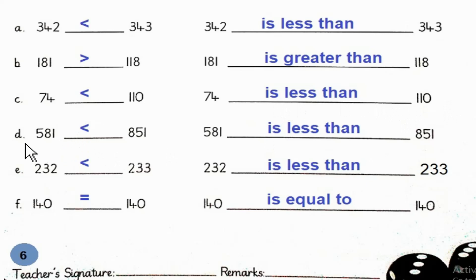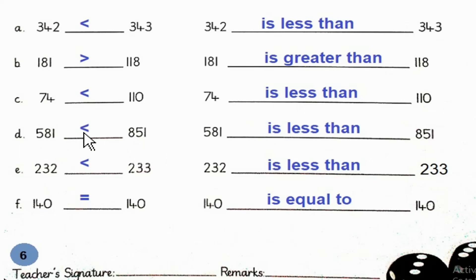D: 581 and 851. So, 581 is less than 851.